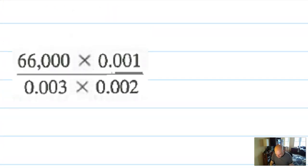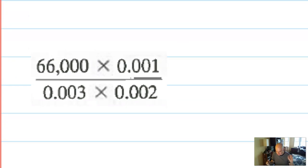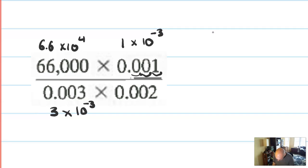And the last one, here's one that I just really don't want to do by hand. So I'm going to think about this in terms of scientific notation. This is 6.6 times 10 to the 1, 2, 3, 4. 10 to the 4th. This is 1 times 10 to the 1, 2, 3. Negative 3. This is 3 times 10 to the negative 3. And this is 2 times 10 to the negative 3.